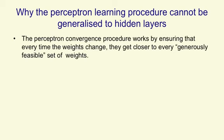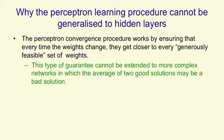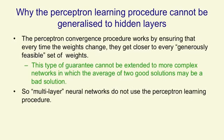The perceptron convergence procedure works by ensuring that when we change the weights, we get closer to a good set of weights. That type of guarantee cannot be extended to more complex networks, because in more complex networks, when you average two good sets of weights, you might get a bad set of weights. So for multilayer neural networks, we don't use the perceptron learning procedure.